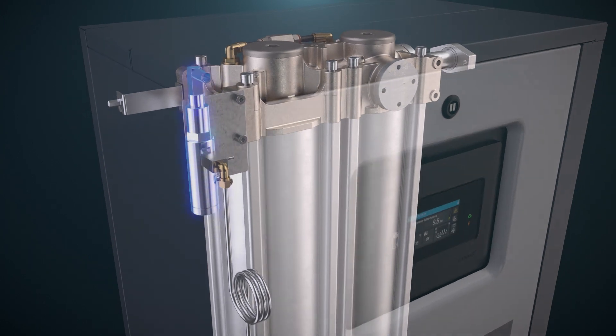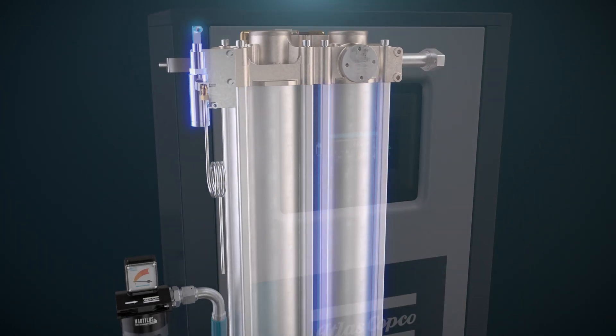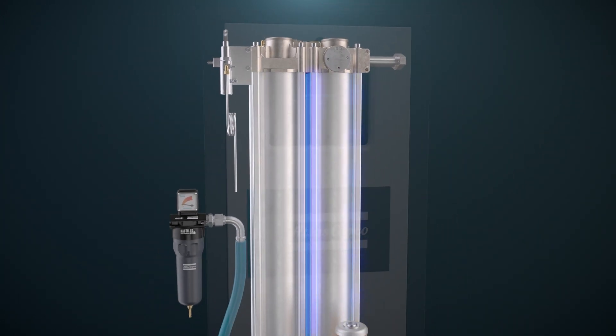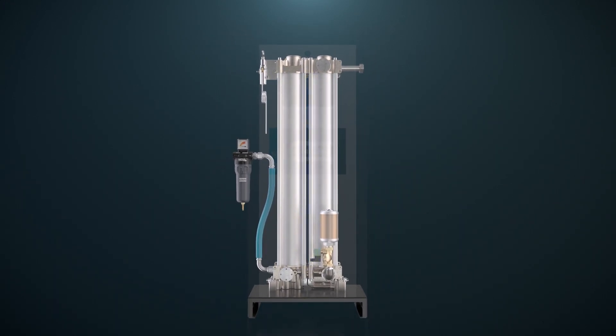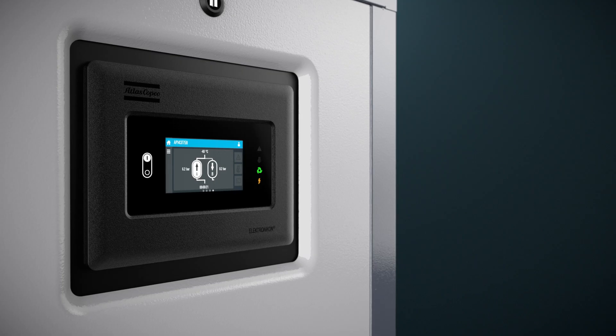In addition, optional dew point-dependent switching ensures the dryer only switches towers when the desiccant is saturated. This means cycle times are longer and your energy use is reduced even more.